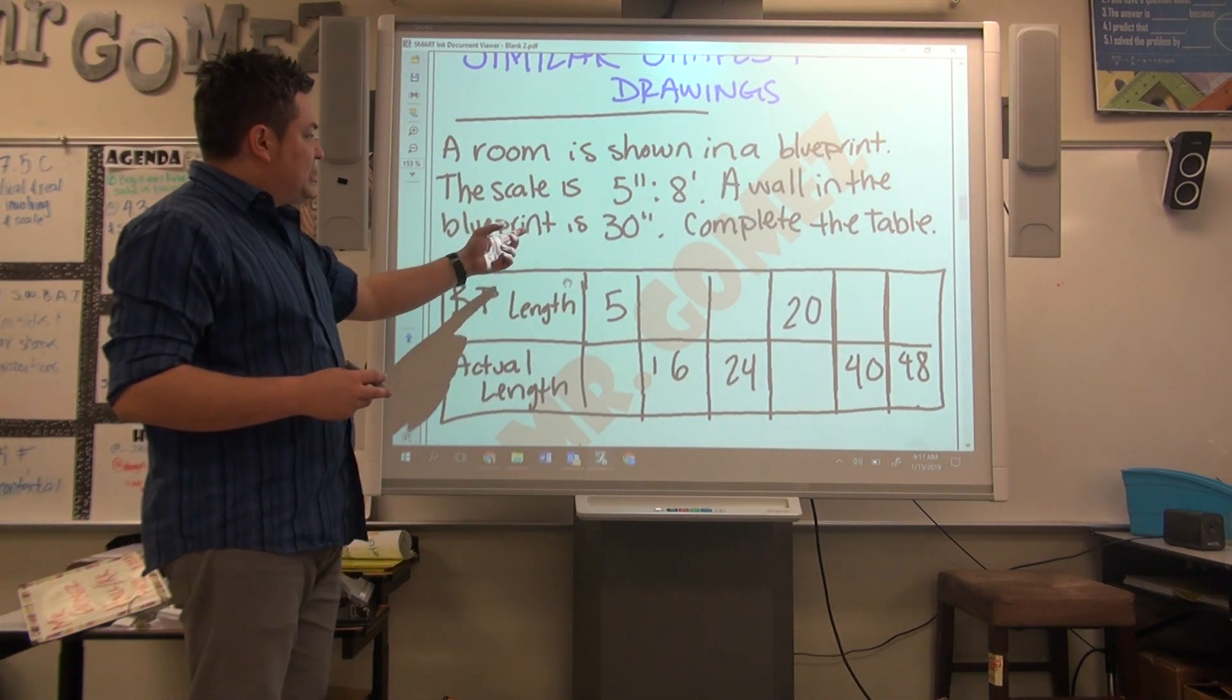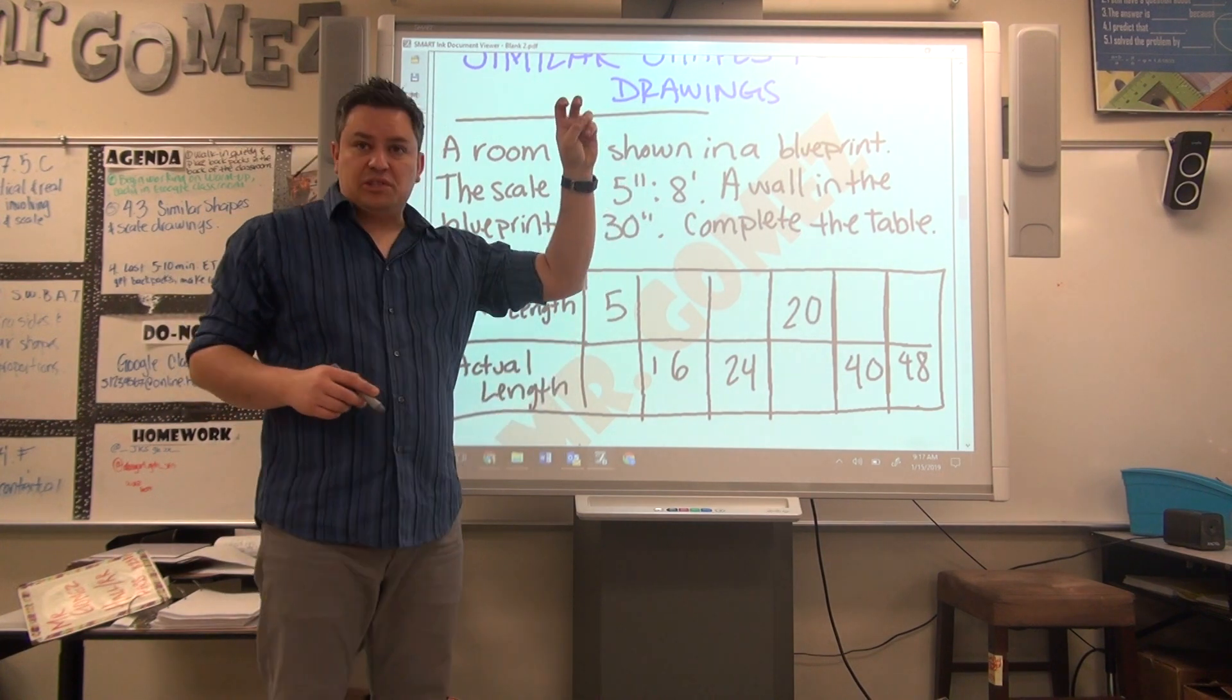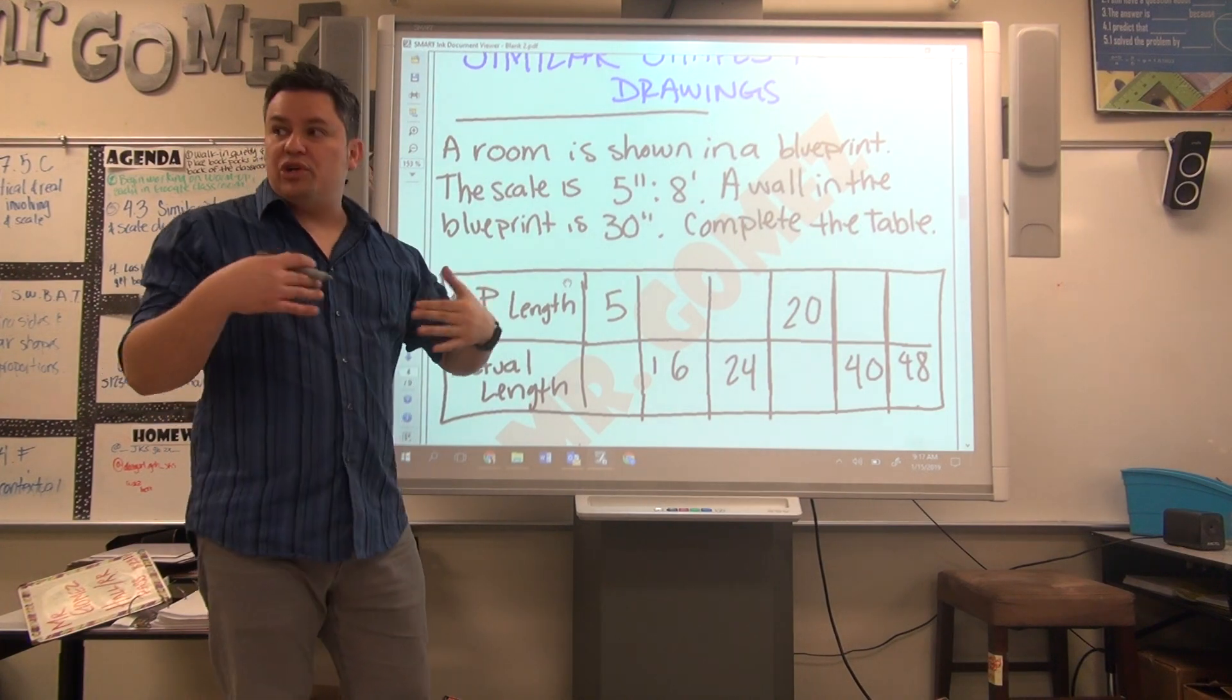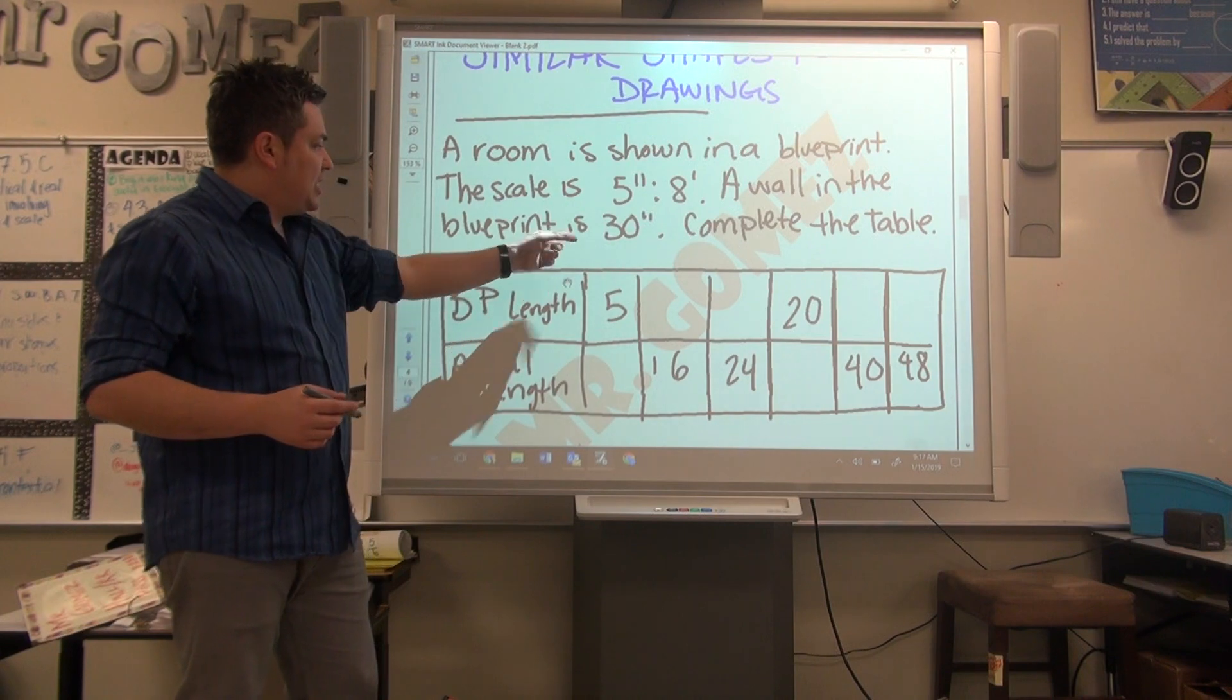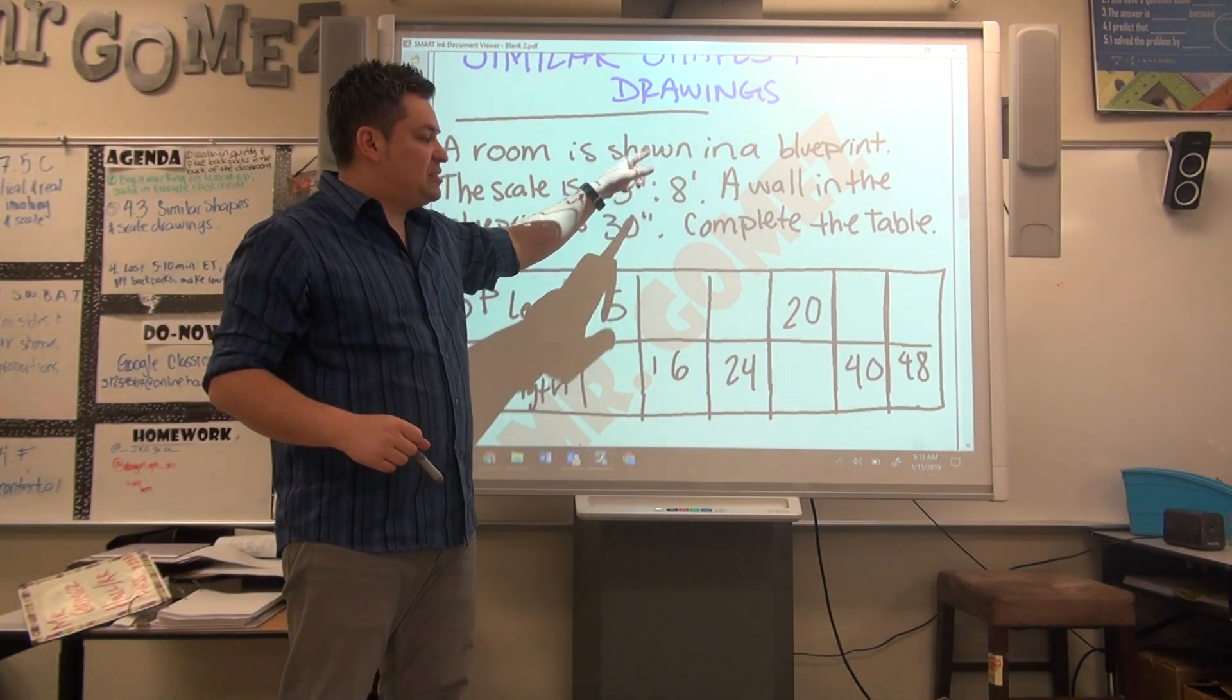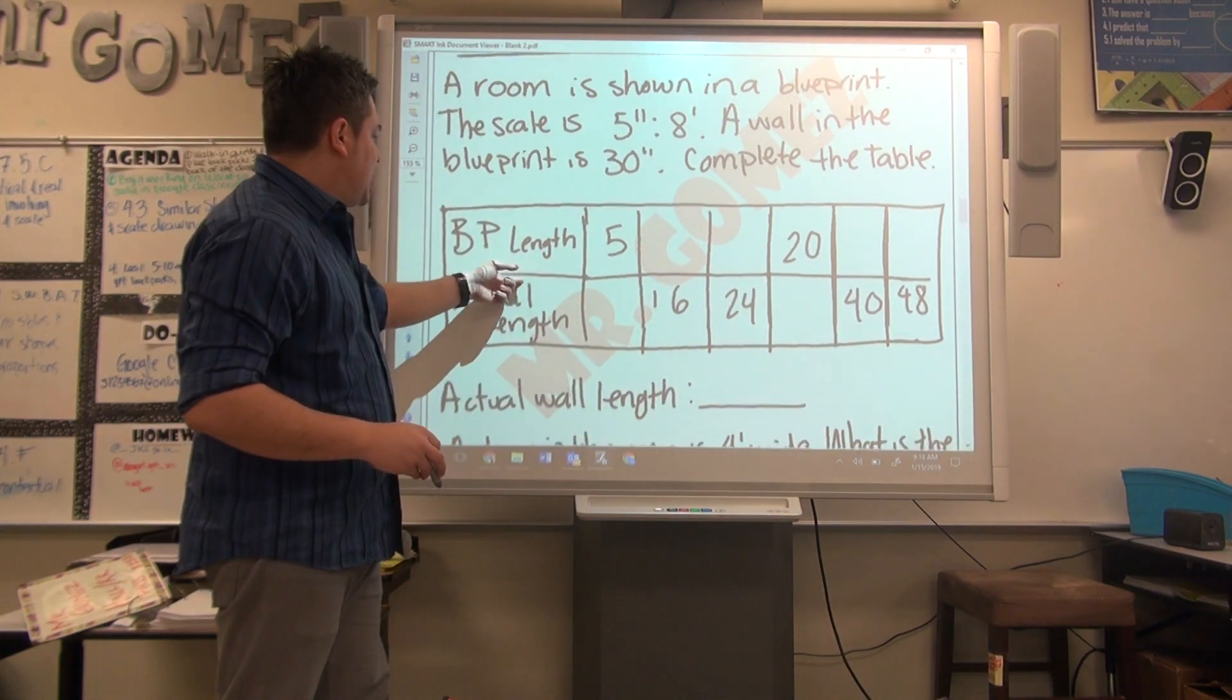An example that says a room is shown in a blueprint. The scale is 5 inches to 8 feet. These quotation marks mean inches, and this symbol means feet. A wall in the blueprint is 30 inches. Complete the table. We know that for every 5 inches, it's going to be 8 feet.